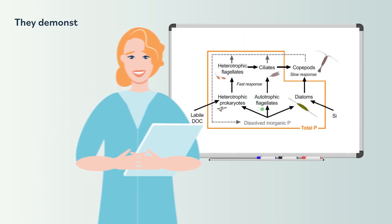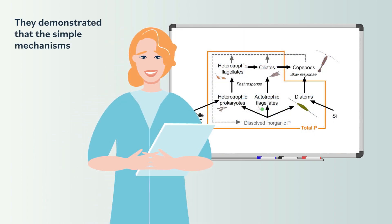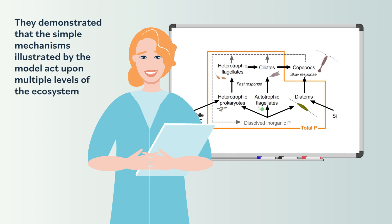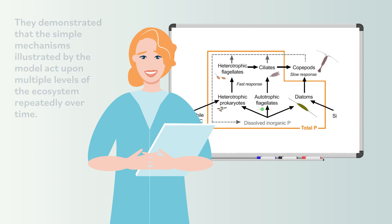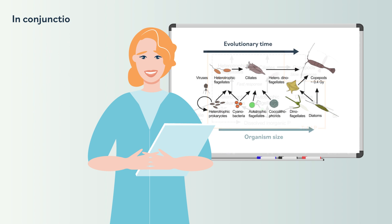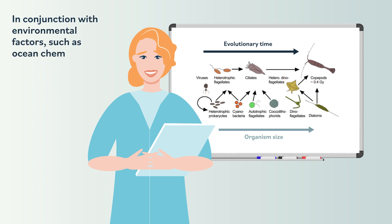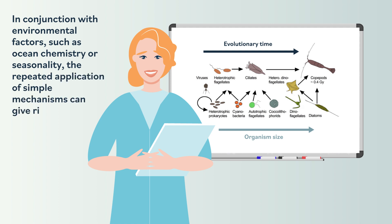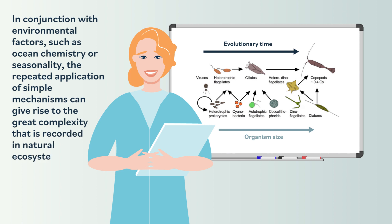They demonstrated that the simple mechanisms illustrated by the model act upon multiple levels of the ecosystem repeatedly over time. In conjunction with environmental factors such as ocean chemistry or seasonality, the repeated application of simple mechanisms can give rise to the great complexity that is recorded in natural ecosystems.